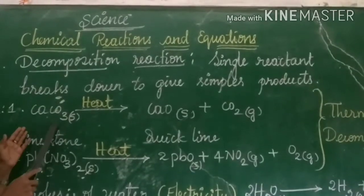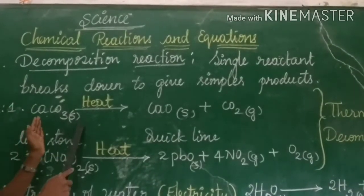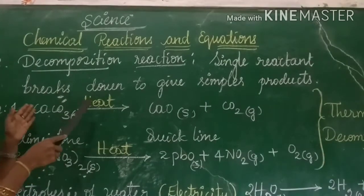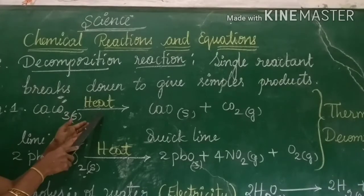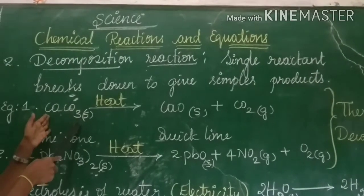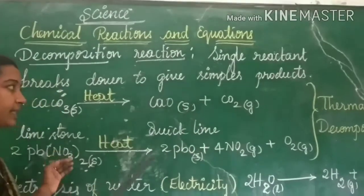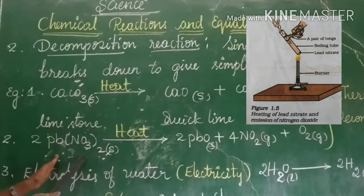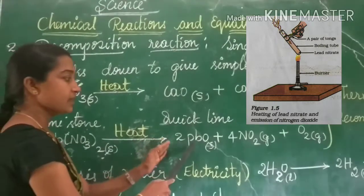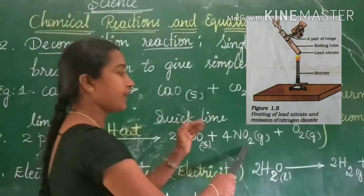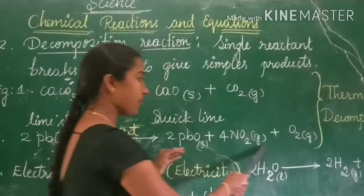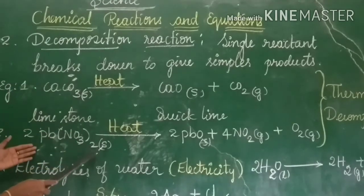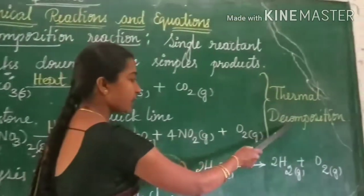For example, limestone breaks down into calcium oxide and releases carbon dioxide gas. The reaction takes place by absorbing heat energy — with the help of heat energy, it breaks down into quicklime and releases carbon dioxide. In the second example, lead nitrate also breaks down by absorbing heat energy, giving lead oxide, nitrogen dioxide gas, and oxygen. In these two reactions, heat energy is used, so this kind of reaction is known as thermal decomposition reaction.